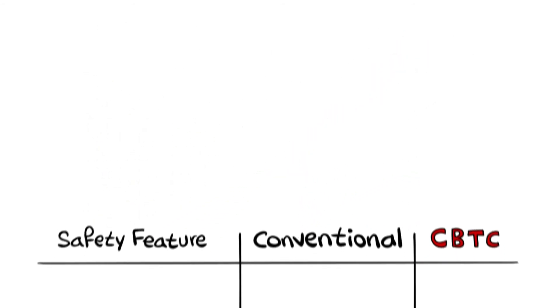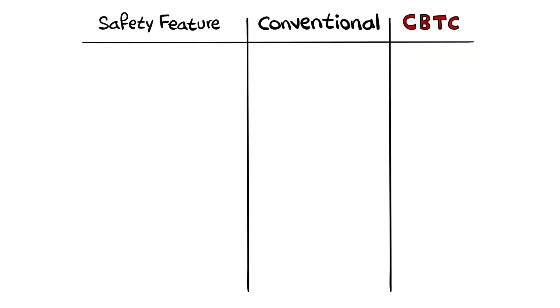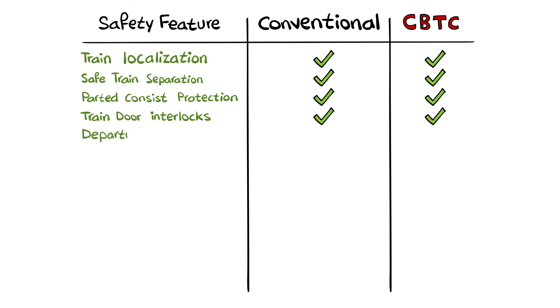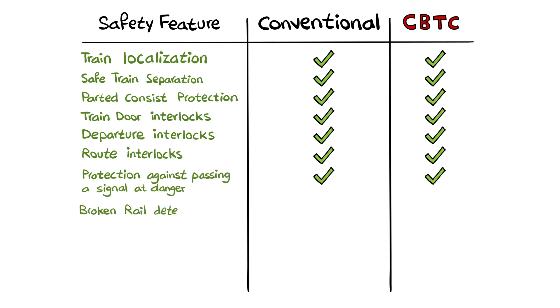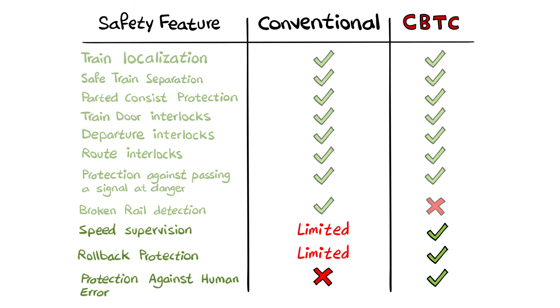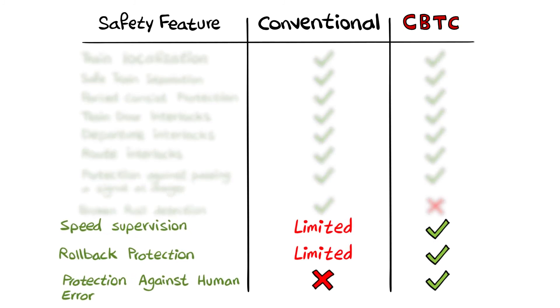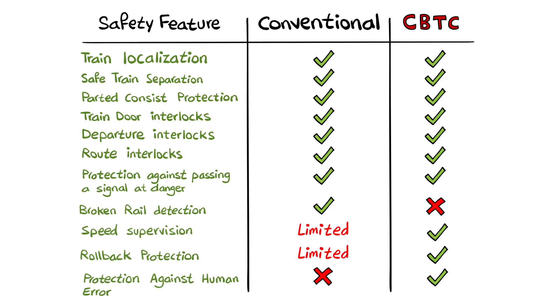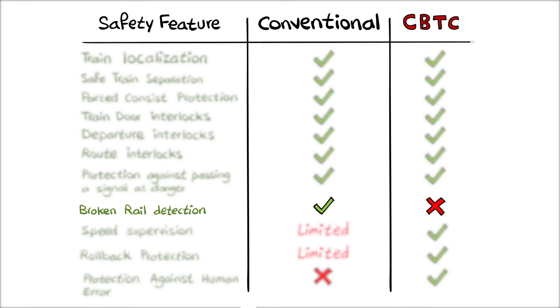But when comparing safety capabilities, CBTC's advantage is marginal. Train localization, safe train separation, parted consist protection, train door interlocks, departure interlocks, route interlocks, and protection against passing a signal at danger are neutral. Broken rail detection favours conventional signalling. Speed supervision, rollback protection and protection against human error favour CBTC, while the rest are neutral.